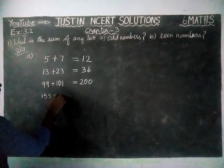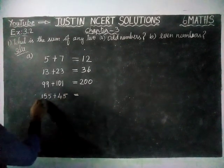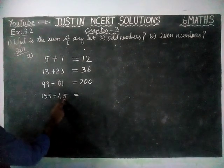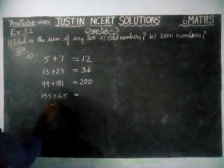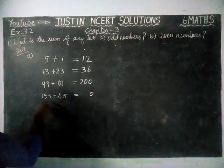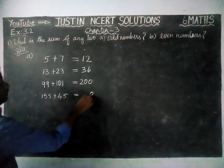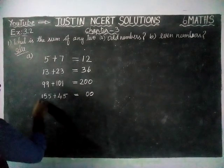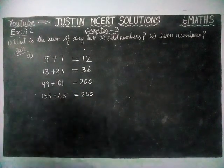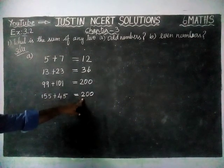155 plus 45. 155 is an odd number, 45 is also an odd number. Now we are going to check the answer. 5 plus 5 is equal to 10, carry 1; 5 plus 4 is equal to 9, plus 1 is 10, carry 1; 1 plus 1 is equal to 2. Again, we are getting an even number. When we are adding two odd numbers, we are getting an even number.